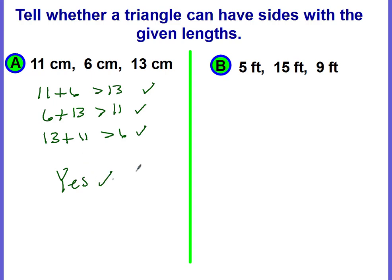Now I want you to pause the video and I want you to try the next one on your own. When you've got your answer, come back and check it. Okay, let's see how you did. First combination, I'm going to take the first two sides, 5 plus 15. Is there sum greater than 9? Sure, 20 is greater than 9.